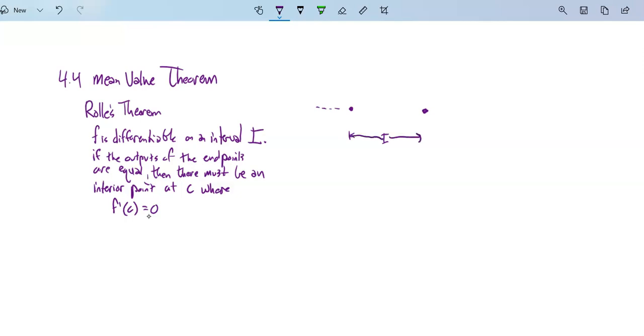Its start point and end point have the same output values. In other words, its height starts and ends at the same spot. If we draw a continuous function in here, there has to be at least one point on this function where the derivative is 0. In this case that I drew, there's two.